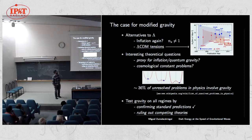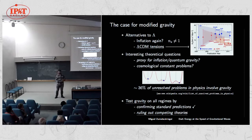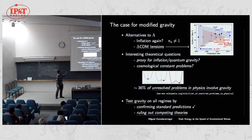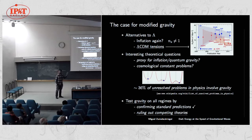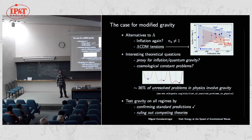There may also be tensions in weak lensing measurements — the Dark Energy Survey says this is not in tension currently, but we'll find out in the next data release when error bars shrink considerably. Either there are systematic effects or there is new physics worth exploring. The second reason is purely theoretical: if you go to Wikipedia, about a third of the unsolved problems in physics involve gravity — the expansion of the universe, its origin, quantum gravity, and so on.